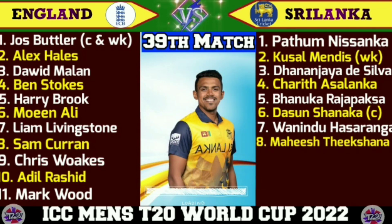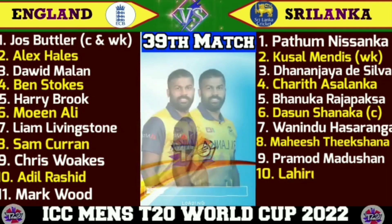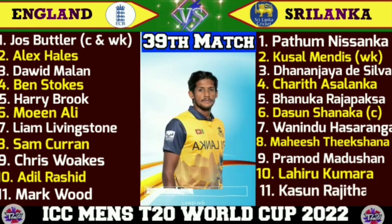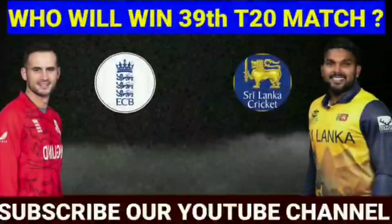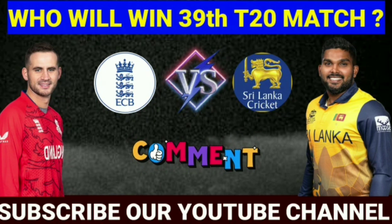8. Mahish Thikshana, Right-Hand Spin Bowler. 9. Pramod Madhusudhan, Right-Hand Fast Bowler. 10. Lahiru Kumara, Right-Hand Fast Bowler. 11. Kusan Ranjita, Right-Hand Fast Bowler. Dear viewers, who will win the 39th T20 match between England vs Sri Lanka? You can tell us by comment.